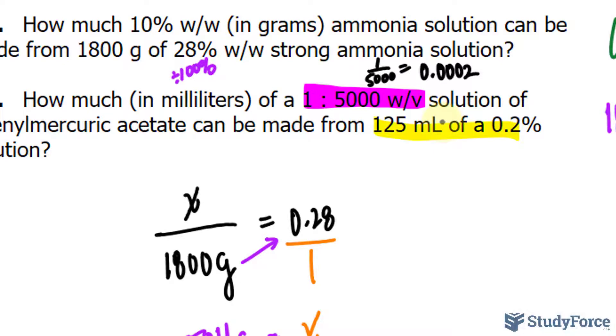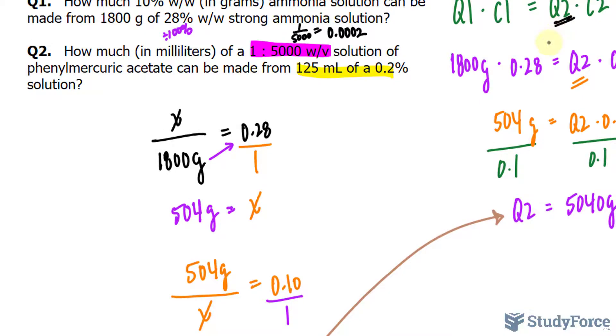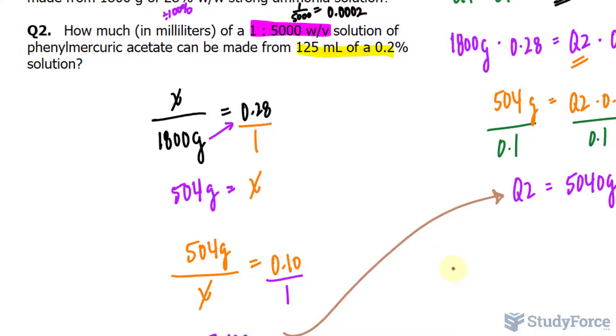If I wanted this as a percentage, I would multiply it by 100%. But since I'm solving for Q2, I need this value to be a decimal anyway. So I have the formula Q1, C1, Q2, C2. 125 is the quantity of the stock times its concentration being 0.2%, which needs to be made into a decimal. So divide by 100%, and you get 0.002. Simply shift the decimal place twice to the left, 0.002.